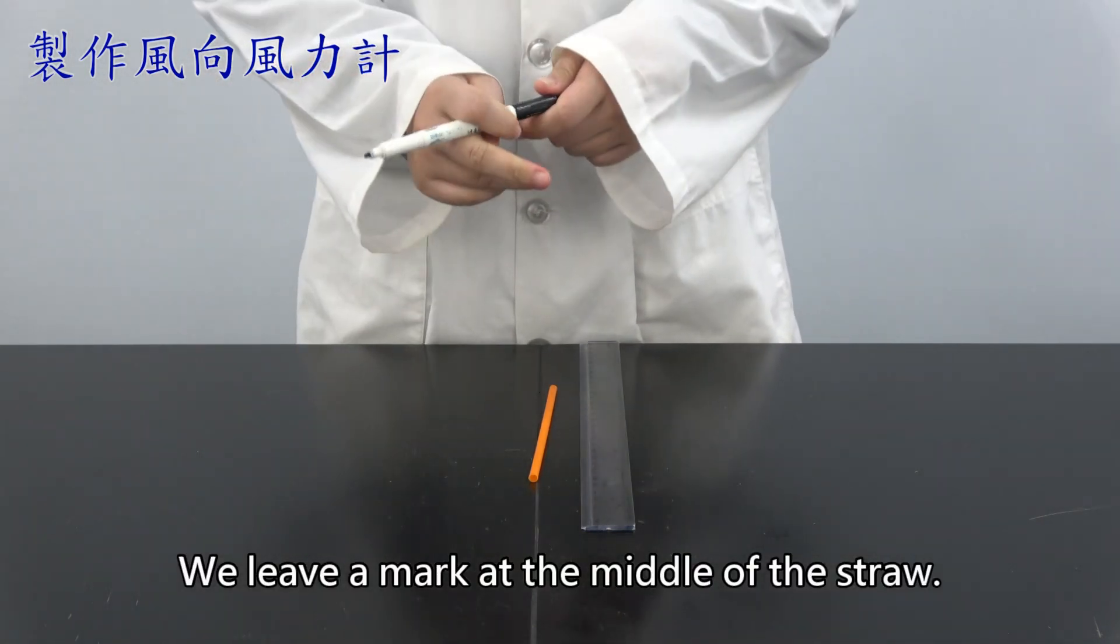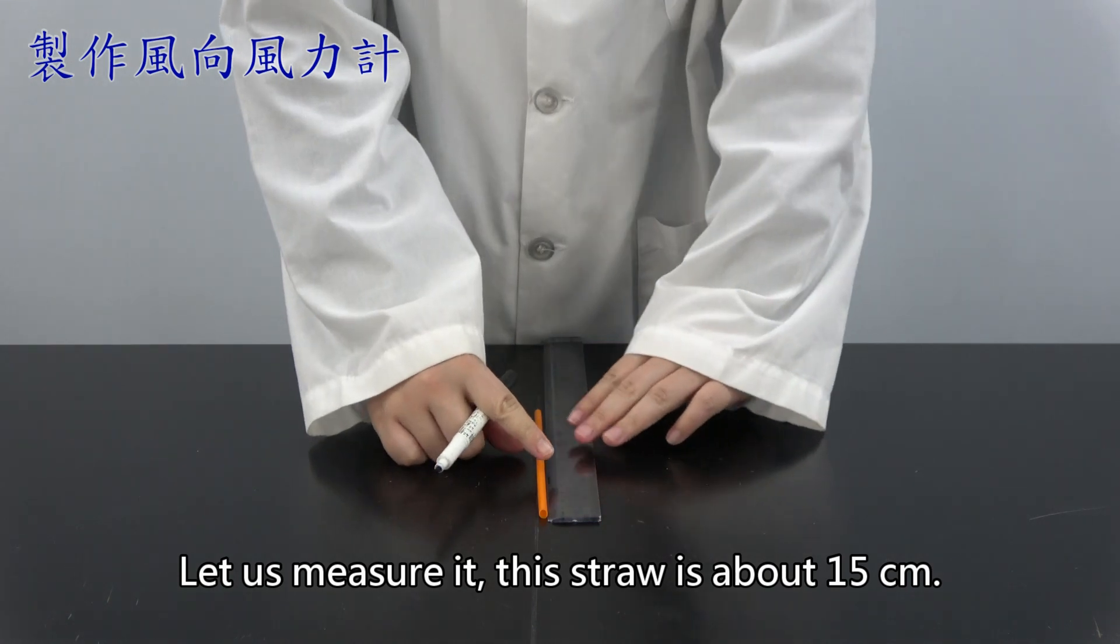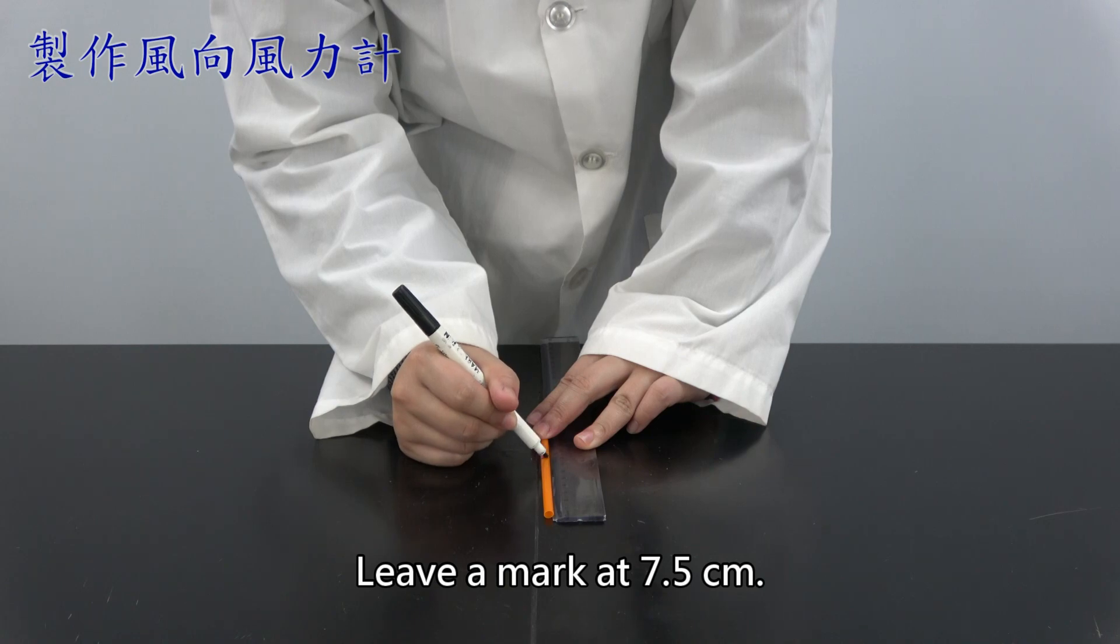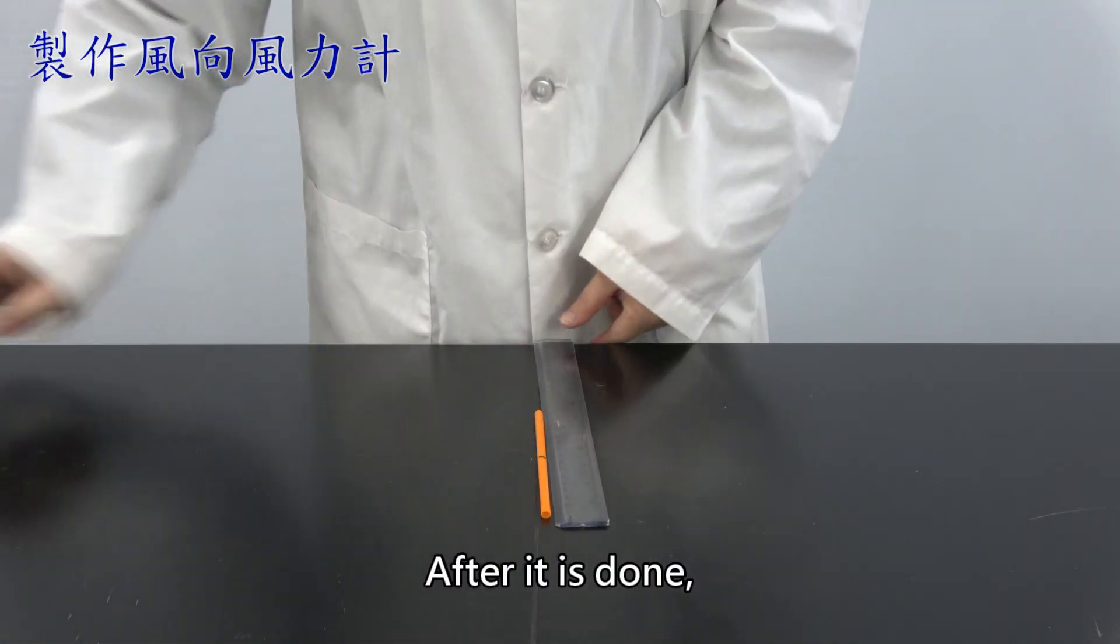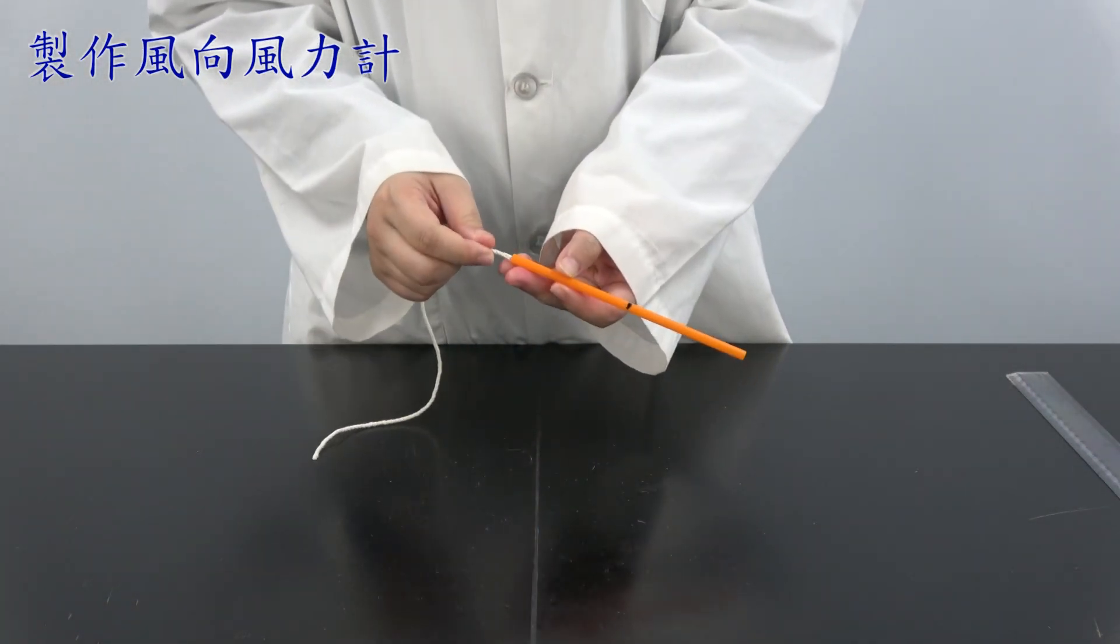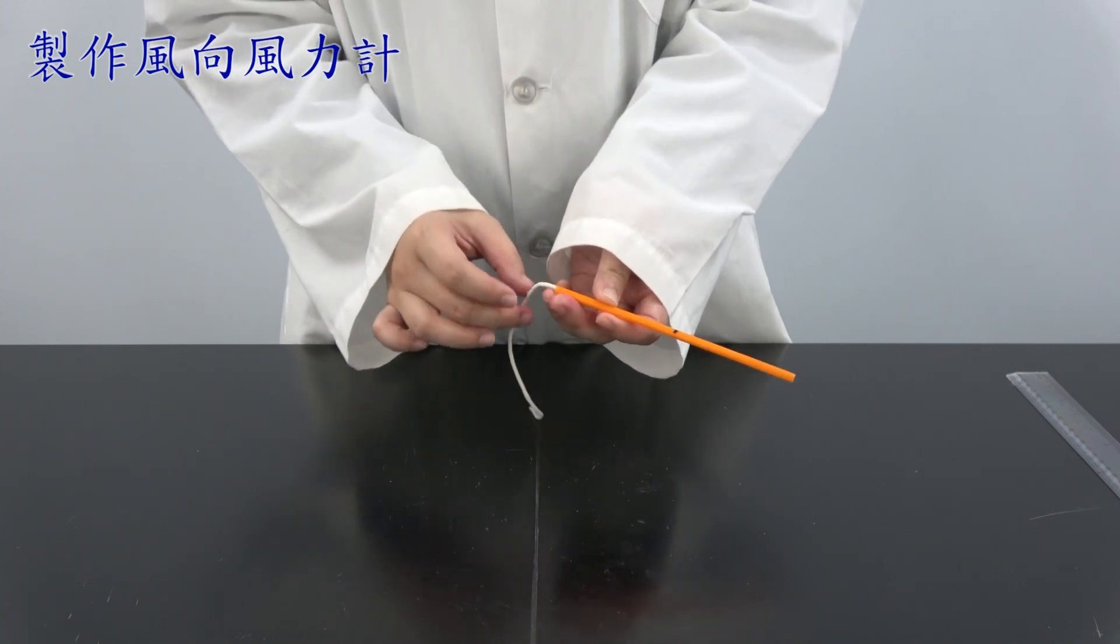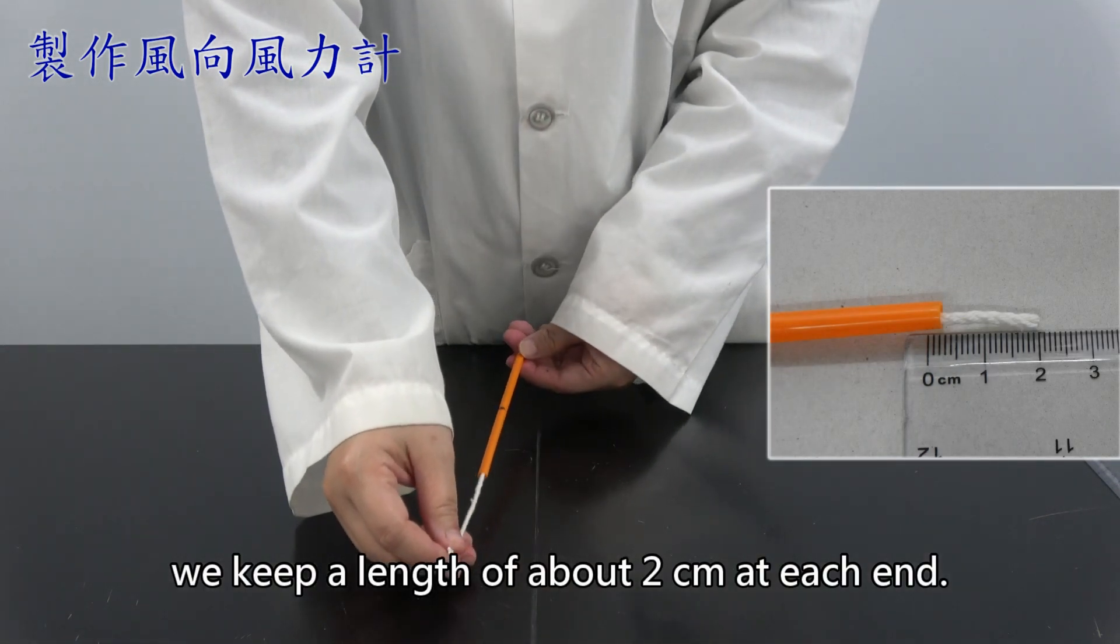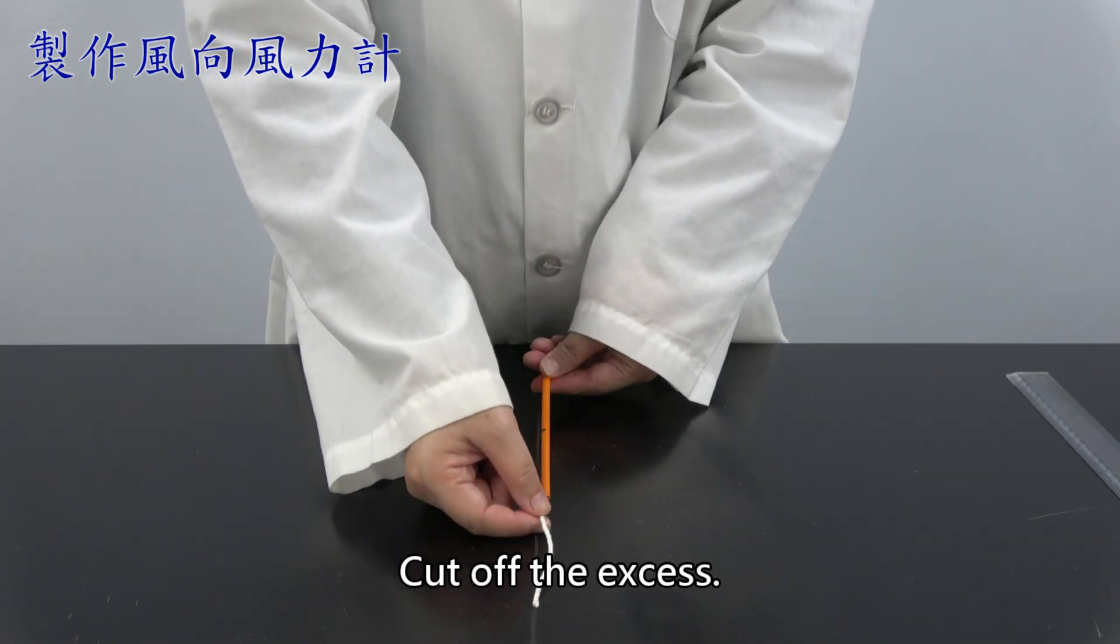We leave a mark at the middle of the straw. Let us measure it, the straw is about 15 cm. Leave a mark at 7.5 cm. After it is done, we put the cotton thread through the straw. Once it is done, we keep a length of about 2 cm at each end. Cut off the excess.